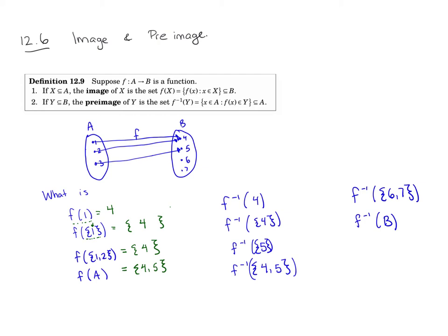All right, so when I take f of the whole domain, I should always get back that range or that image. So that's sort of using that image notation as one of our vocab words there. So that's the image of a set. It's just the set of outputs that you get.